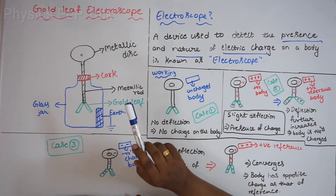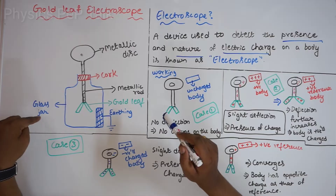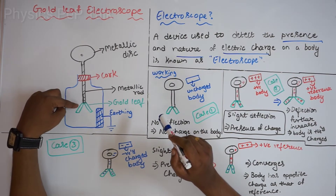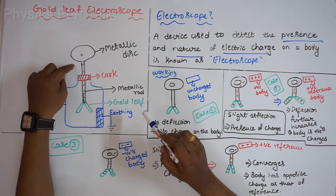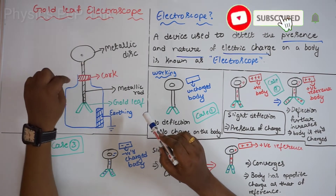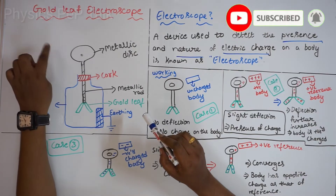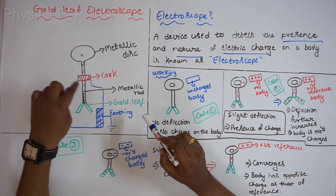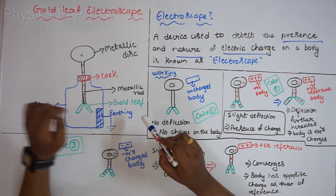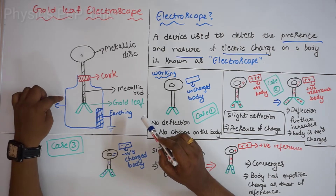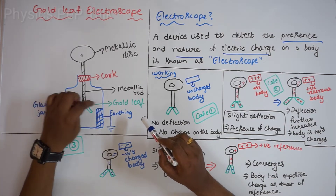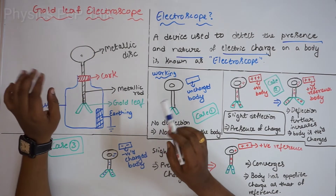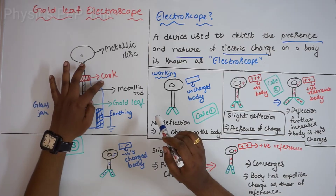Construction of gold leaf electroscope: it consists of a glass jar and a metallic rod. At one end of the metallic rod we place gold leaves, and the other end is connected to a metallic disc. This jar is separated from the surroundings by an insulating cork, and the whole glass jar is given earthing. The metallic rod and metallic disc are good conductors, while the cork is also an insulator.